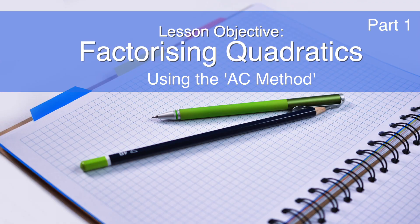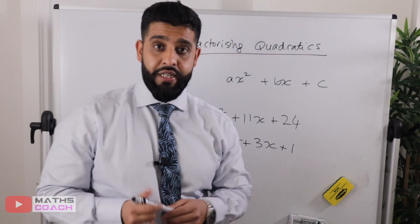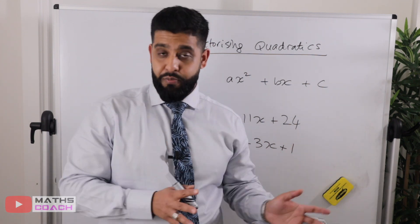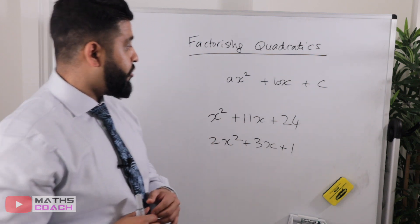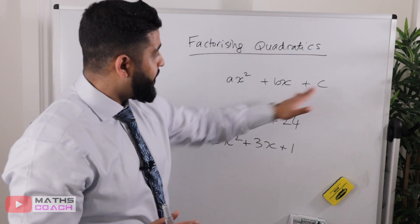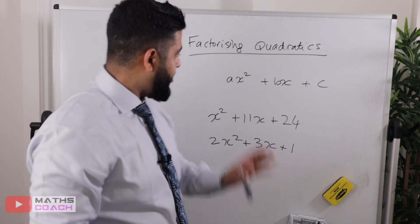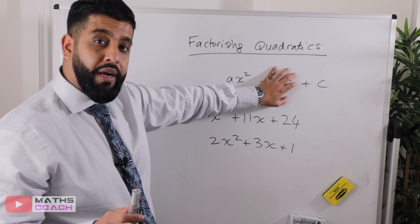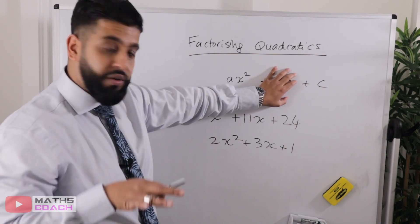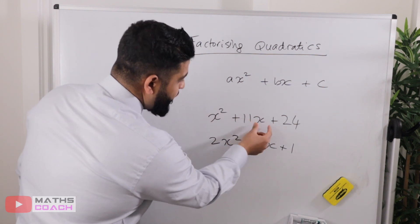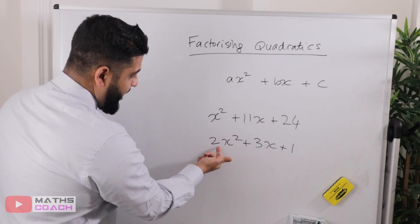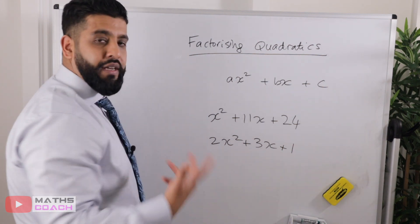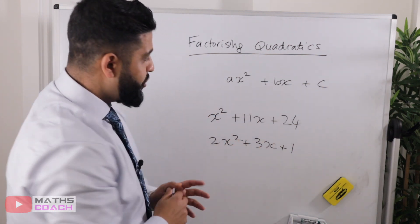We are now going to be looking at quadratic factorization. Quadratic factorization is slightly different to the factorization of linear expressions. The way to notice whether you're dealing with a quadratic is to look out for this format. Some quadratics may have the middle term missing, but they still require a double bracket. Quadratics have this format: x² plus a value of x plus a number, or they may have 2x², 3x², or 5x² and so on.